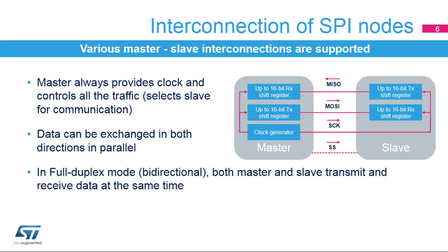The SPI master always controls the bus traffic and provides the clock signal to the dedicated slave through the SCK line. The master can select the slave it wants to communicate with through the optional slave select or NSS signal. Data stored in the dedicated shift registers can be exchanged synchronously between the master and slave through the MOSI (master output, slave input) and the MISO (master input, slave output) data lines.